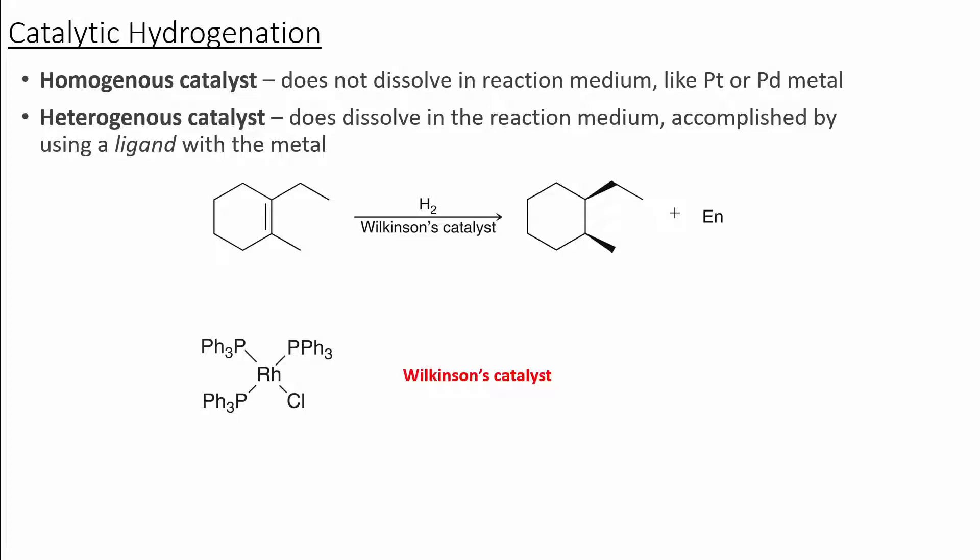The Wilkinson's catalyst is a rhodium catalyst that has three triphenylphosphine groups attached to it. This is an example of a heterogeneous catalyst because it's able to dissolve in organic solvents due to the nonpolar phenyl groups attached to the catalyst.